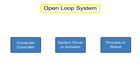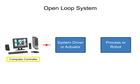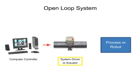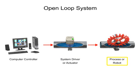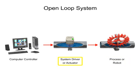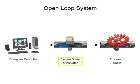In open-loop control systems, signals are first sent by a computer controller to the system driver. The system driver then converts those signals into an operation for the process or robot to perform. The system driver can be anything from a pneumatic actuator, a hydraulic flow valve, or an electrical controller.